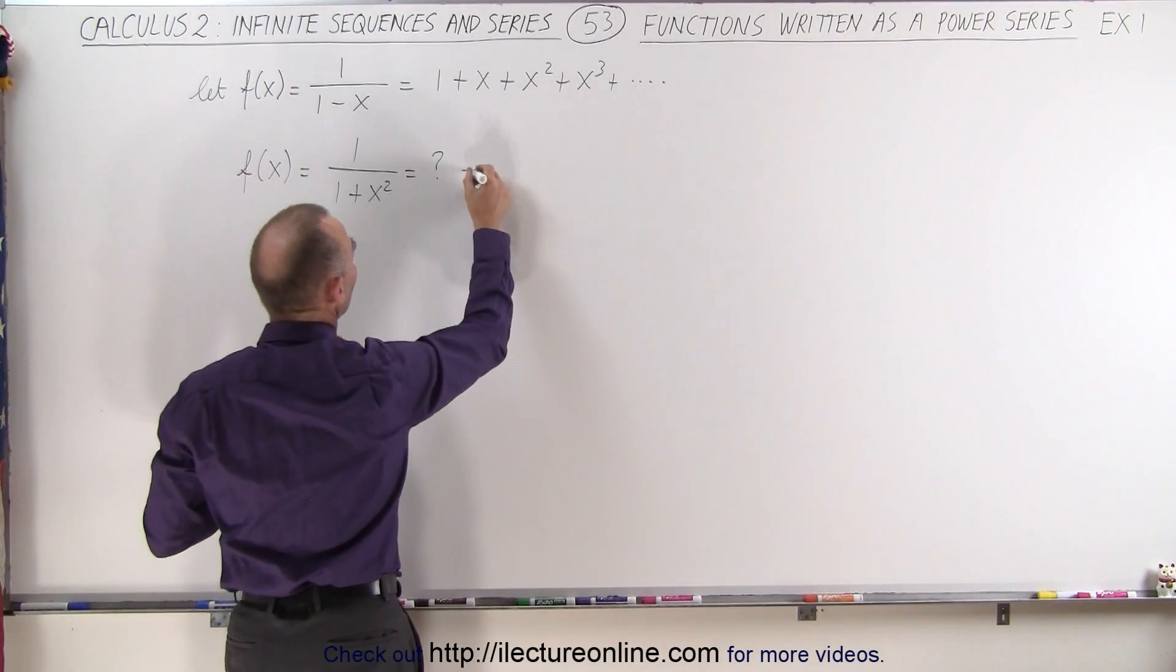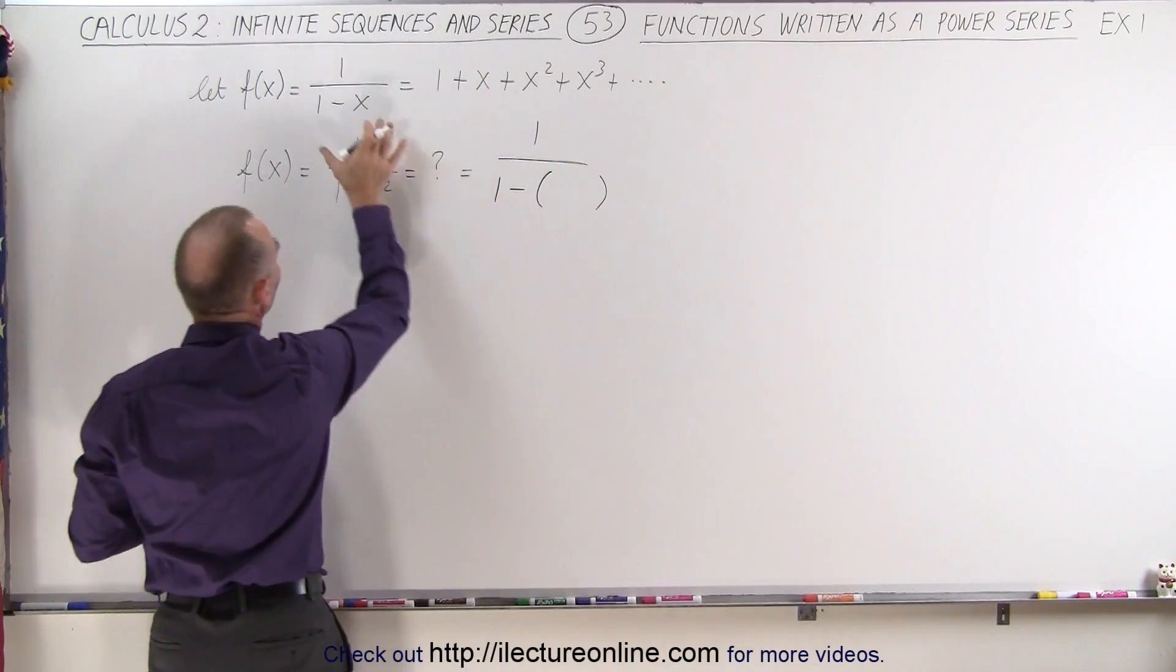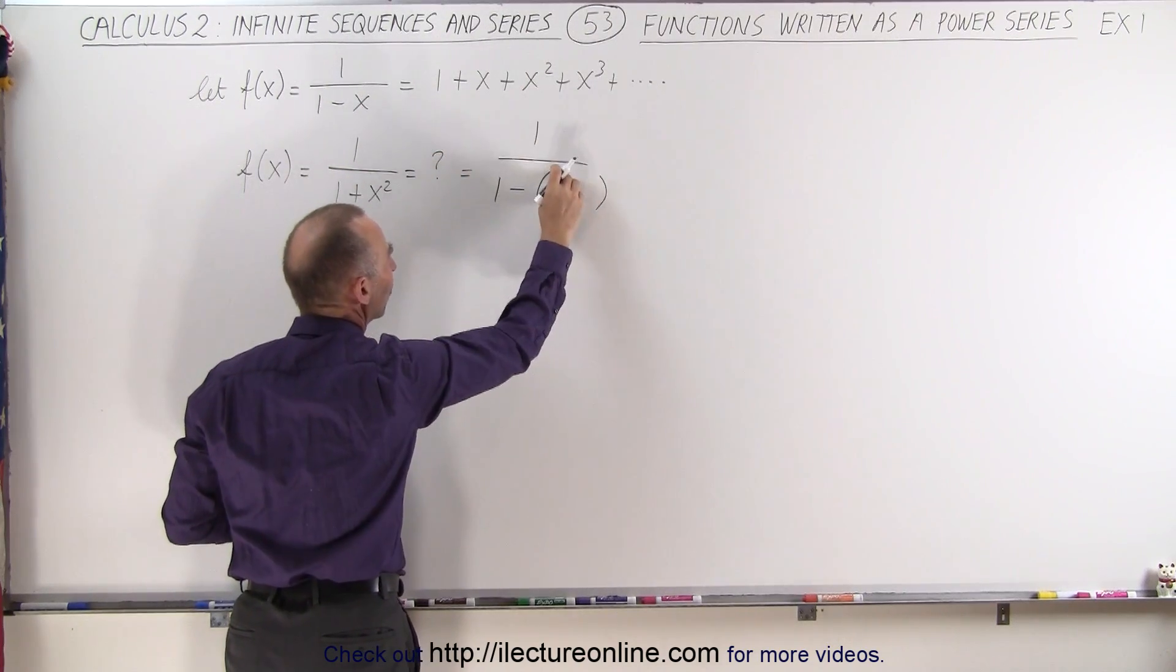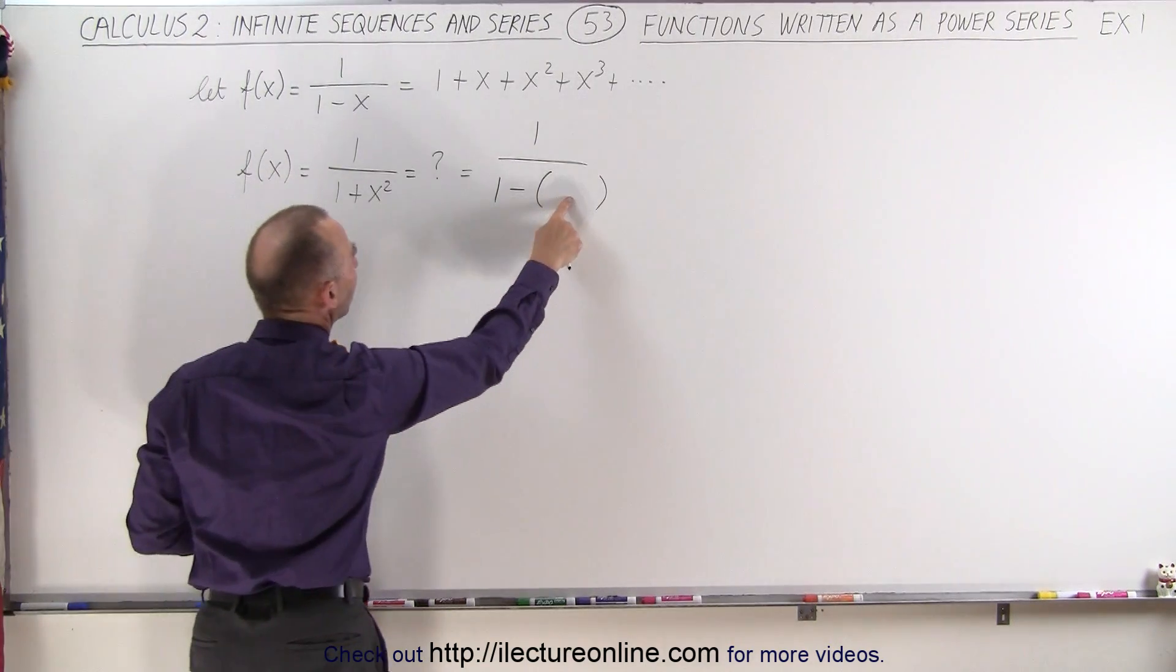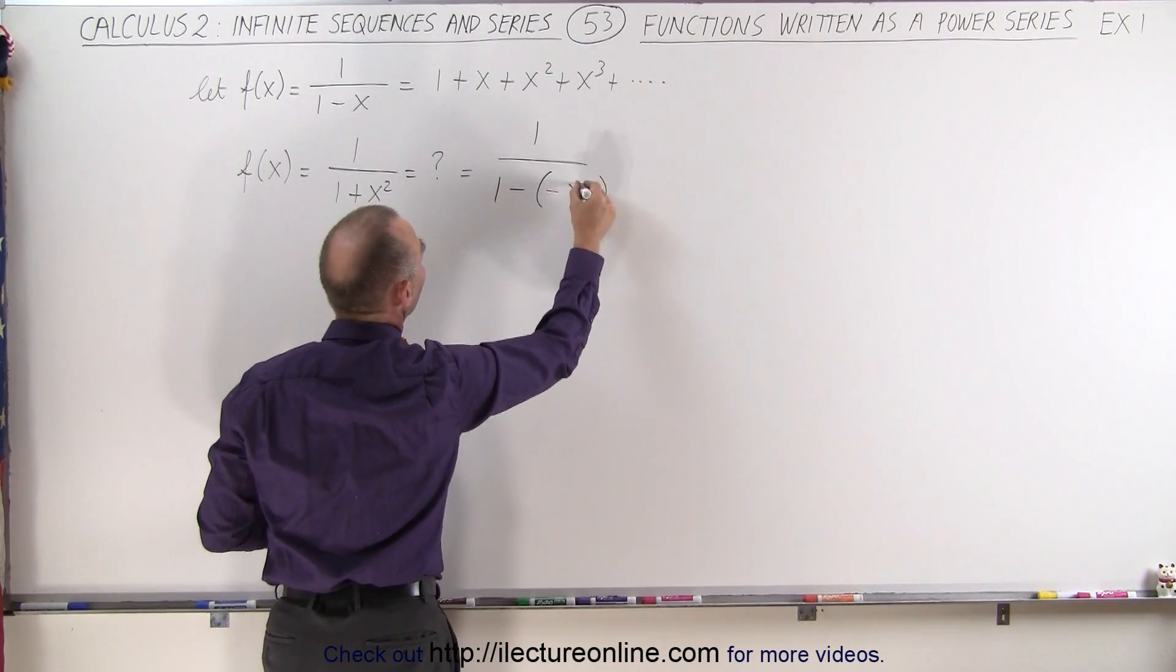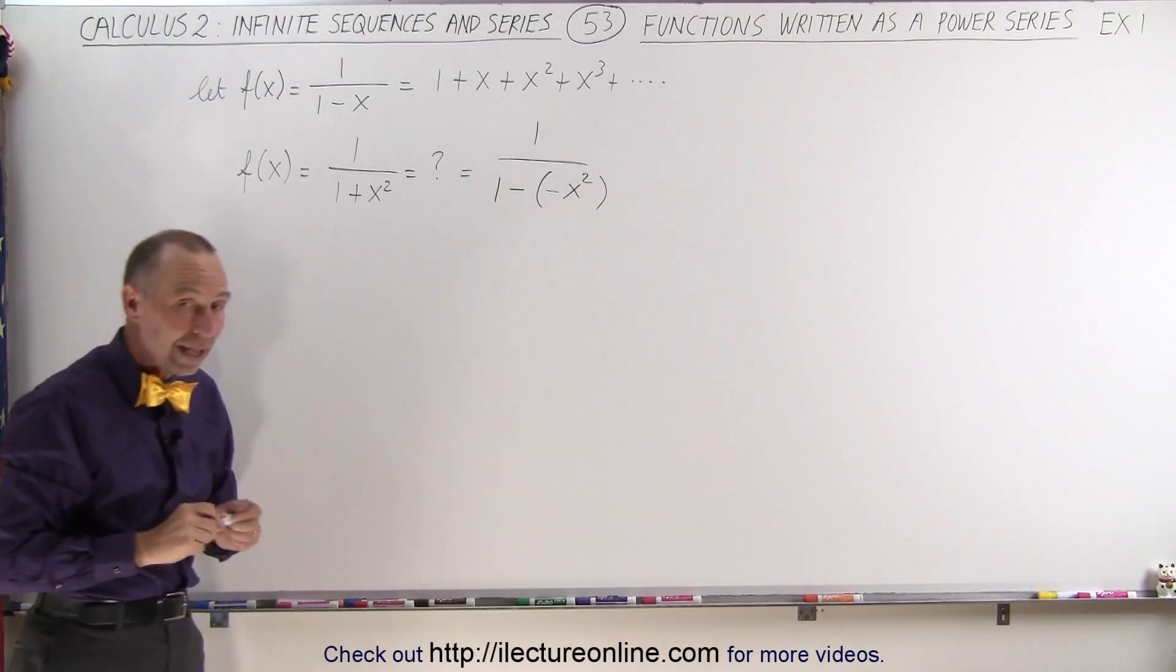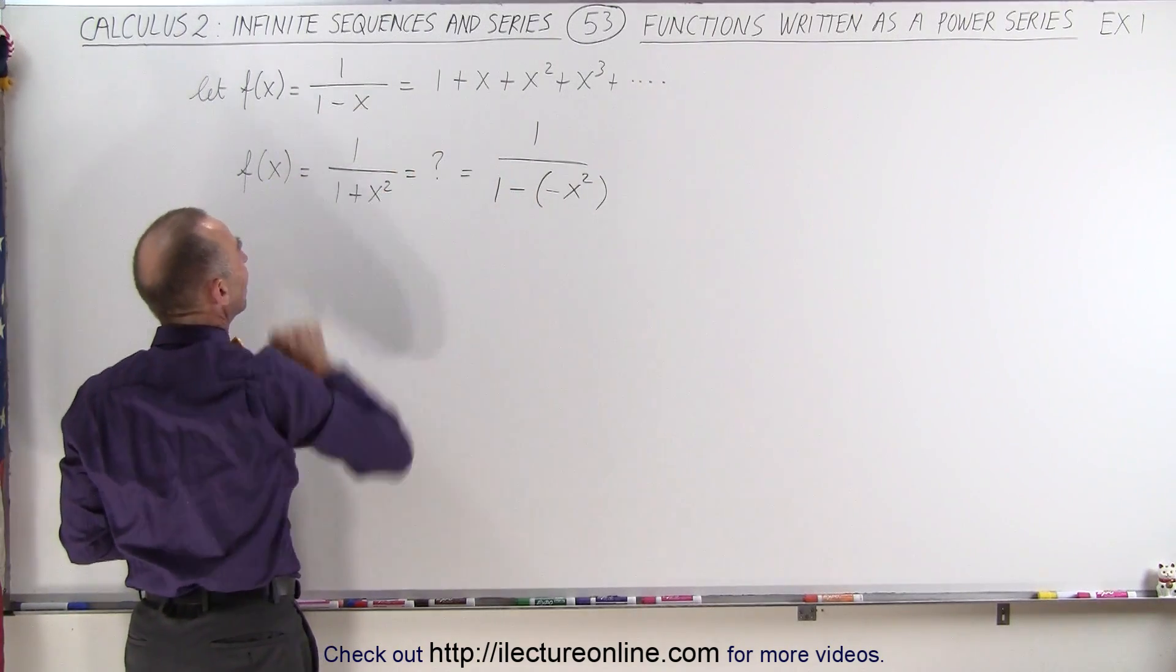And so we can say that this can now be written as 1 divided by 1 minus something. So that instead of an x there we have something else, but then we can write it in the very same way and replace every x here by what's over here. So let's go ahead and do that. What do I need to put in here so this looks exactly the same as this? And the answer is minus x squared, because a minus times a minus makes a plus and that's the same as 1 over 1 plus x squared. So we have the same thing we have over here, but now we have it in the format that we have over here.